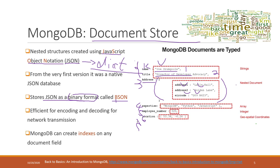The value of a document field can be another document, a string, a number, or a list. For the address field, it is another nested JSON document with its own key-value pairs. And here we can see the value for the enterprise key is a list, and we also use a list to represent geospatial coordinates.